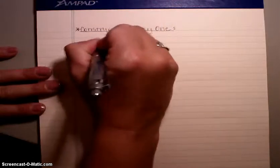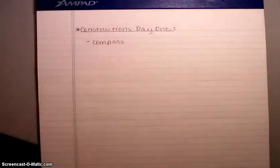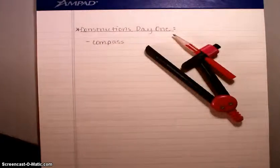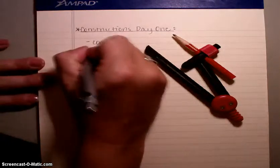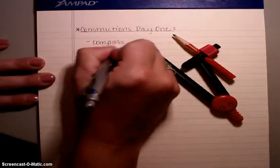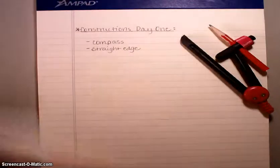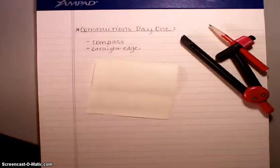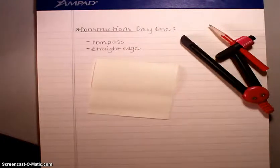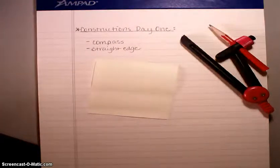For constructions, you only need two tools. The first tool is a compass — that's the red and black tool that was handed out to you. The other thing you need is what we call a straight edge, which is just anything that allows you to draw a straight line, not necessarily a ruler. To prove my point, I'm going to use a Post-it, because that allows me to draw a straight line. The purpose of constructions is to either replicate a figure or bisect a figure without using any measuring tools like a ruler or protractor.